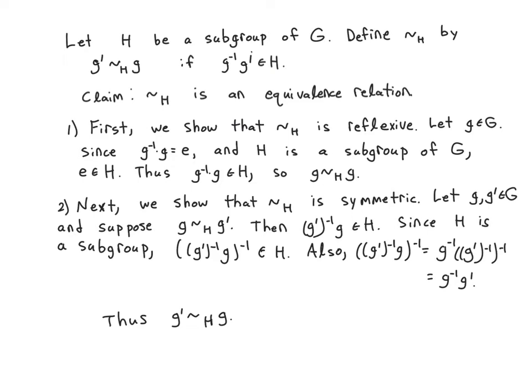This is the direction we are headed — I want to talk about equivalence relations. I find this a natural way to explain results about cosets. Given a subgroup H, you can define an equivalence relation on G as follows: two elements are related — G prime is related to G — if and only if G inverse G prime is in H. The claim is that this is an equivalence relation, and the second part of the claim is that the equivalence classes are the cosets.